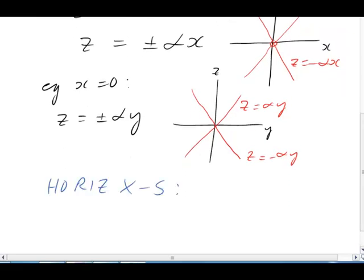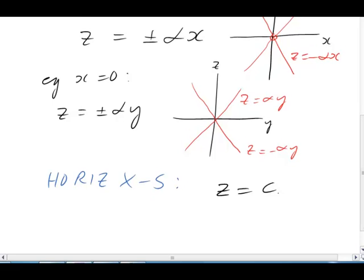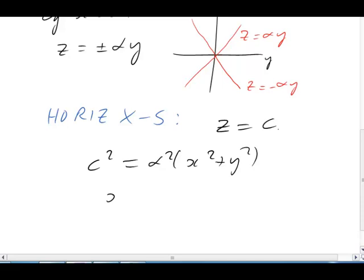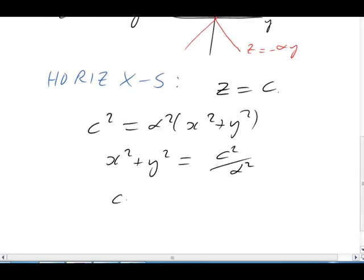For a horizontal cross-section, we set z equal to a constant, and substitute that into the cone equation. For example, just take z equals, say, c. Then we get c squared equals alpha squared x squared plus y squared. And if we divide by alpha squared, then x squared plus y squared equals c squared over alpha squared. These are circles with radius c over alpha.